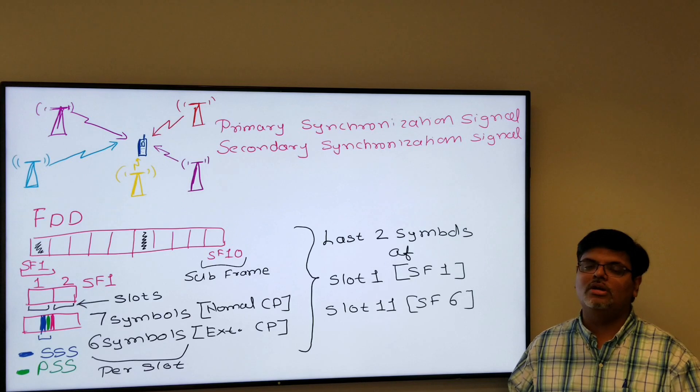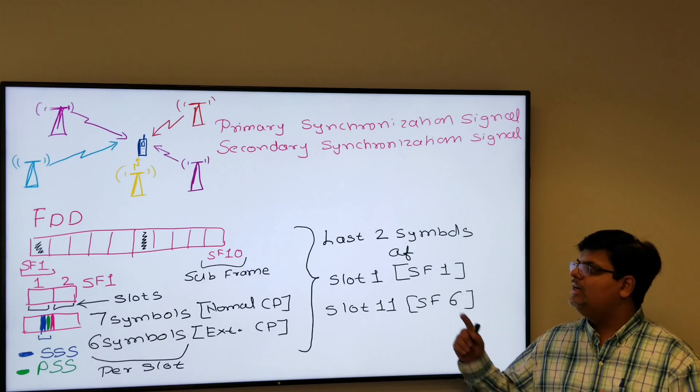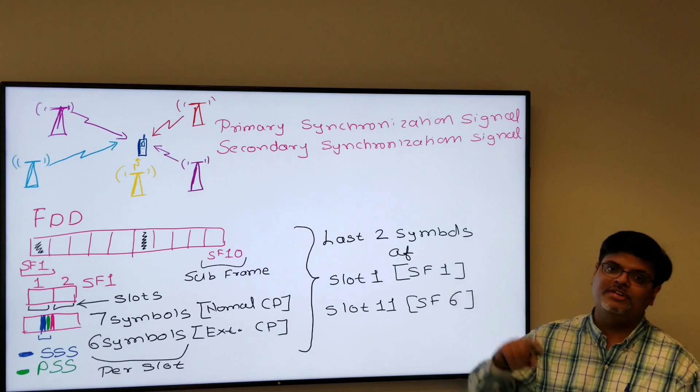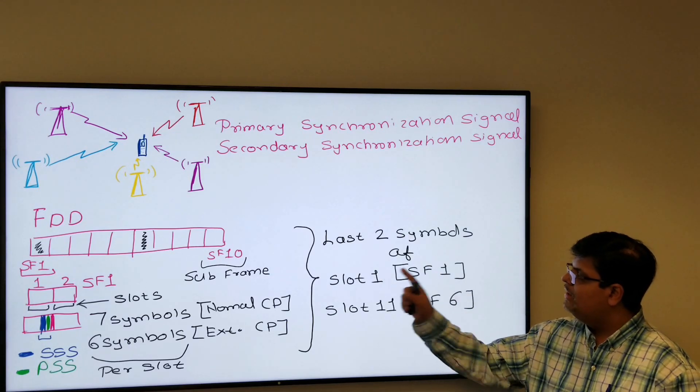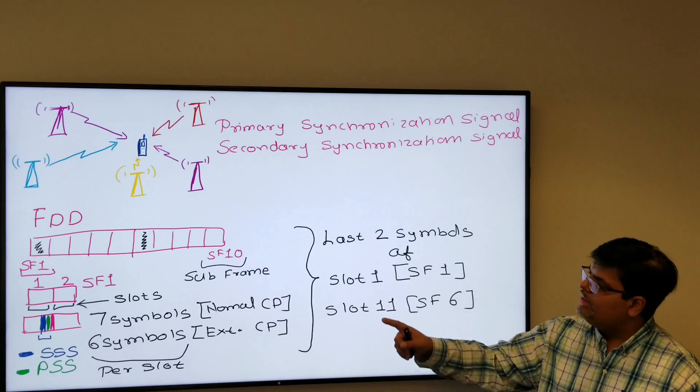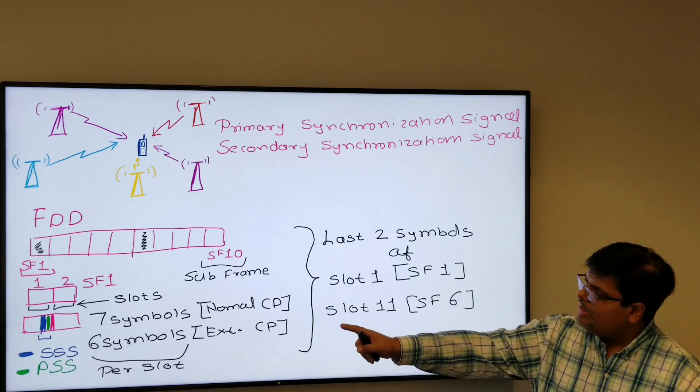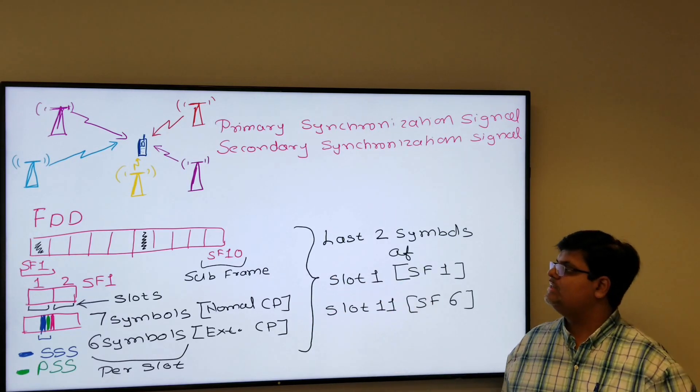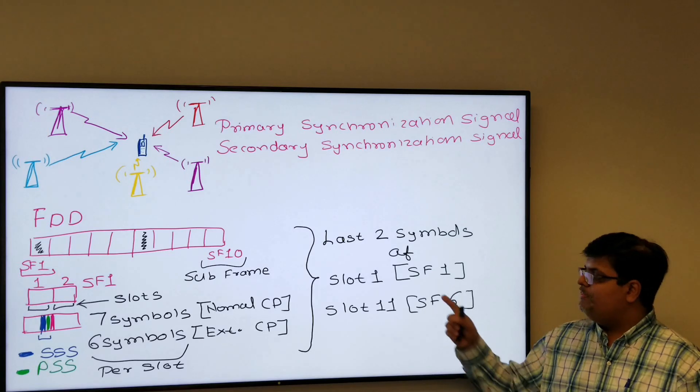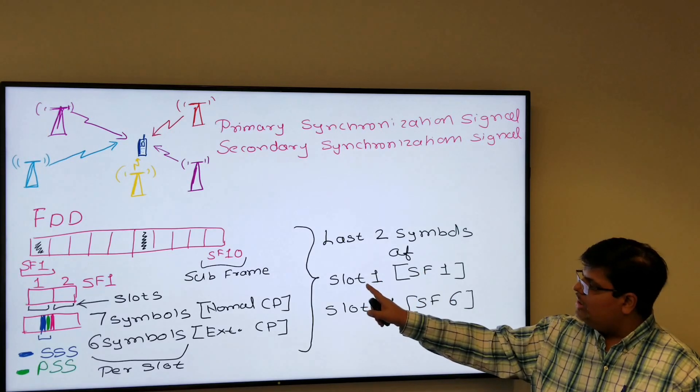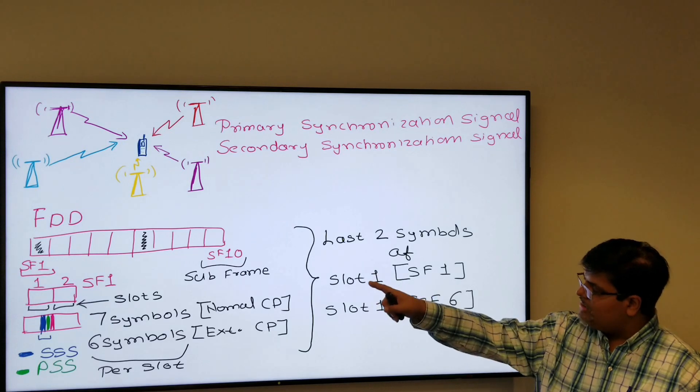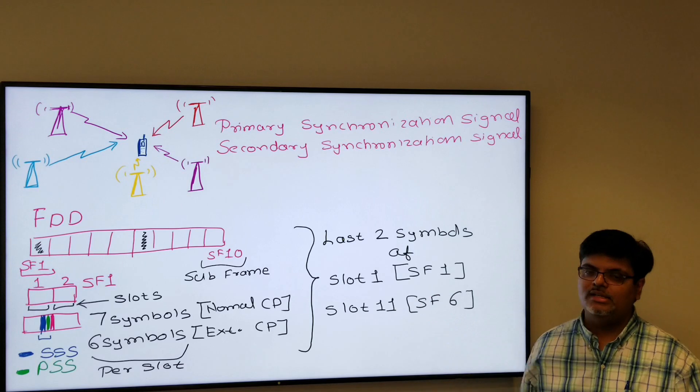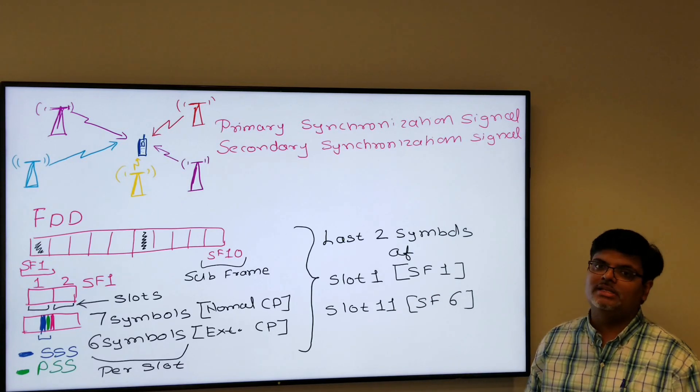Here the PSS and SSS are transmitted in subframe 1 and subframe 6 for FDD. There are two technologies, FDD and TDD. In slot 1 and slot 11, in slot 1 the last symbol is your PSS and one symbol preceding to PSS is your SSS, and it is repeated every five milliseconds. So slot 1 is in the first subframe, each subframe is one millisecond, so after five milliseconds again this is repeated, so the repetition rate is five milliseconds.